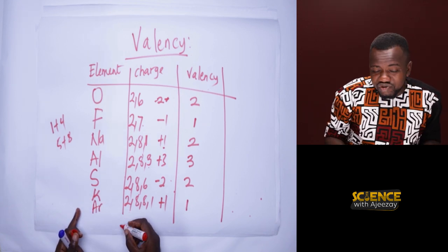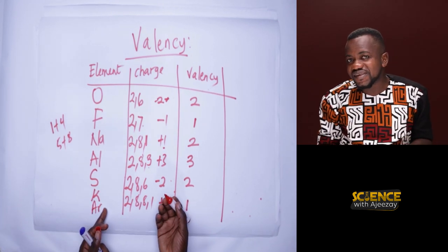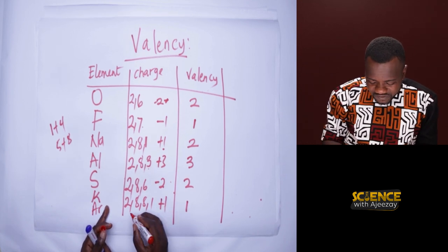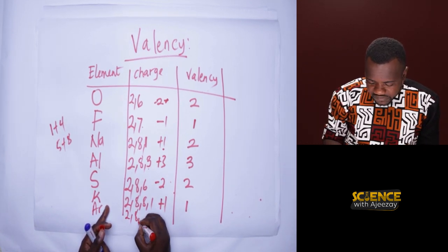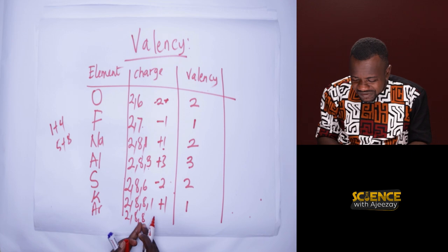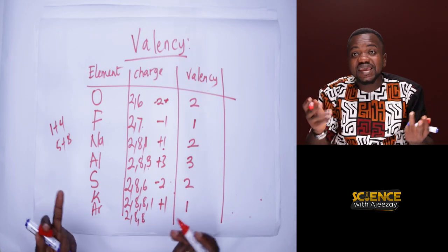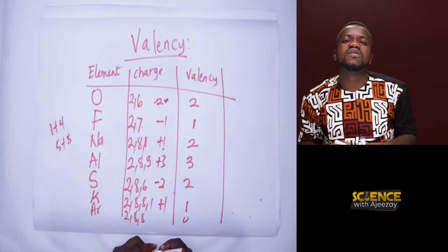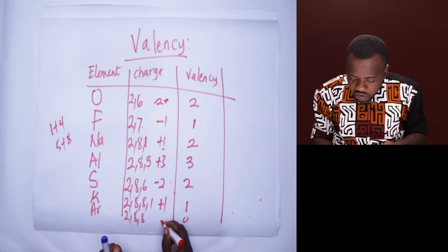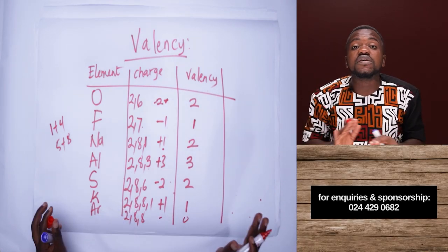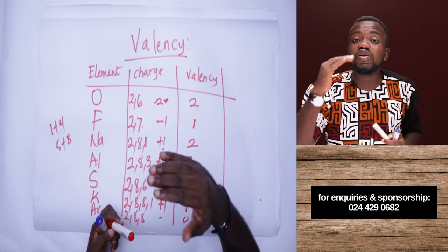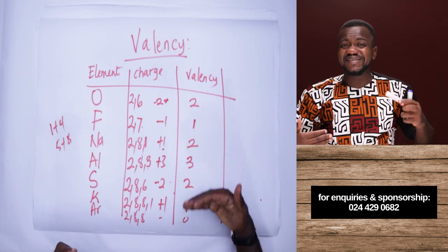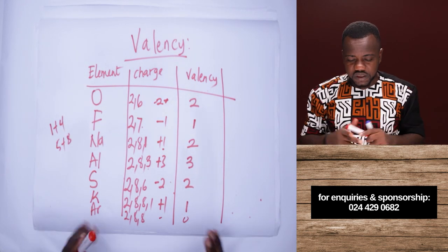If you take argon, which is element 18, its configuration is 2, 8, 8. Eight minus eight equals zero. So the valency for argon is zero, because argon does not form a charge — argon is stable. You can look at the configuration of an atom and tell immediately if it is stable or not.